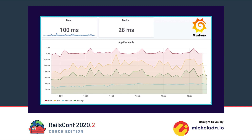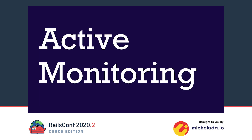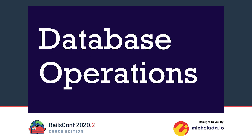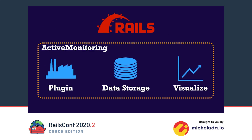Let's talk a little bit about performance monitoring. Performance monitoring helps us to spot and identify performance bottlenecks in our applications. Many of you probably use a software-as-a-service platform like New Relic or Skylight. Today we will build a tool called Active Monitoring together, which will implement a subset of the features you know from New Relic or Skylight. Because we only have 30 minutes, our implementation will only cover response time and database operation metrics. The tool will have three components: a Ruby on Rails plugin, a data storage, and a dashboard for data visualizations.